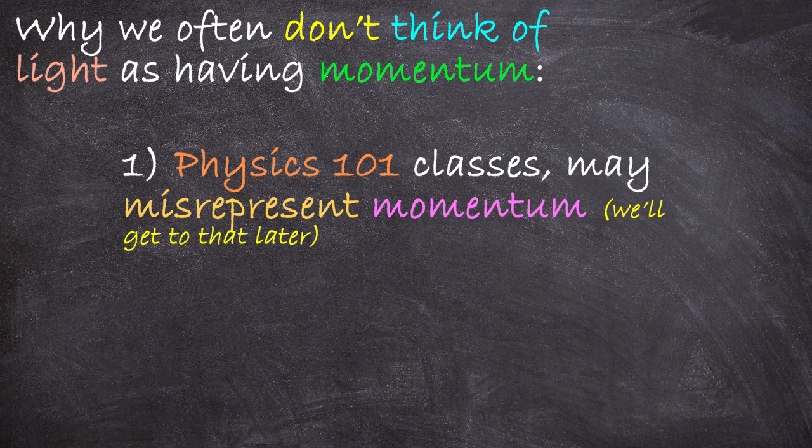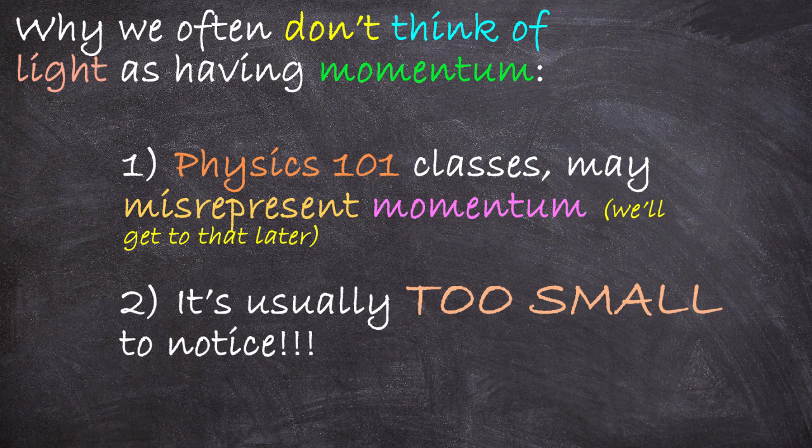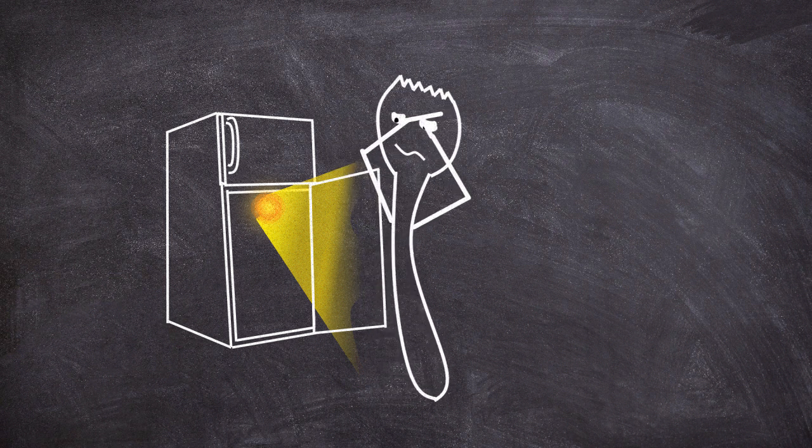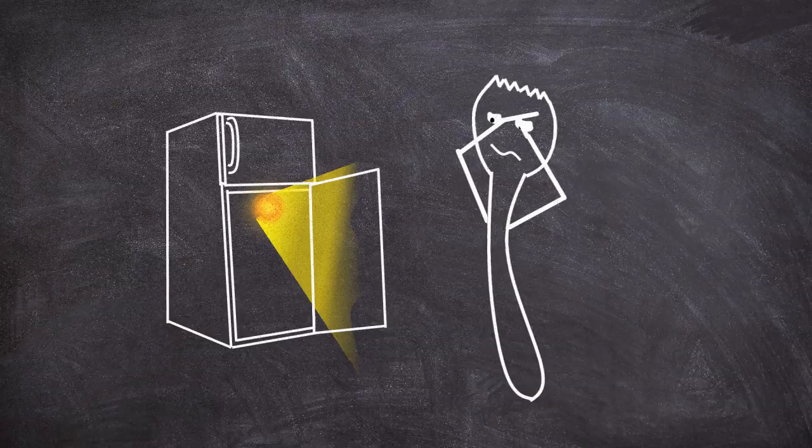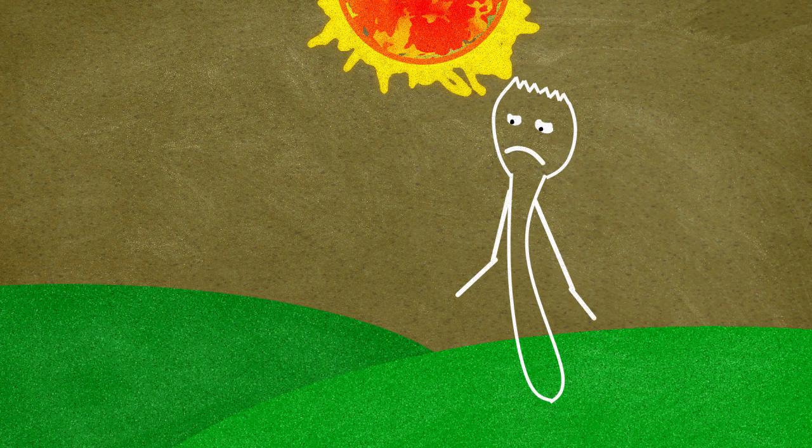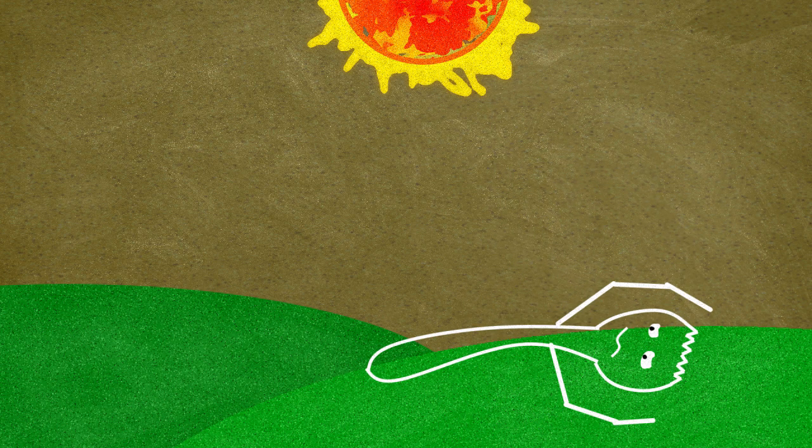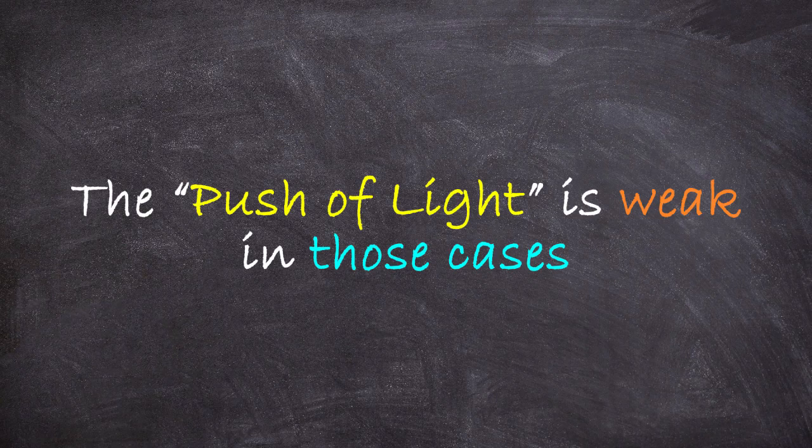However, the other main reason is quite simple. We really don't notice this push of light in everyday life. I mean, when you open your fridge, you don't feel like some repulsive push when the little fridge light turns on. Or when we step out into sunlight, we don't feel like we're being pushed to the ground. And the reason for that is simply because the push of light isn't very strong in those cases. And you can see why just by looking at the very simple formula for how strong this push should be.